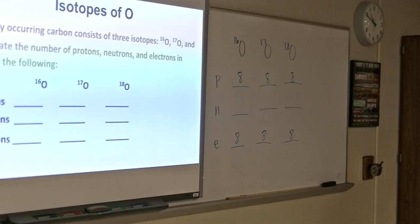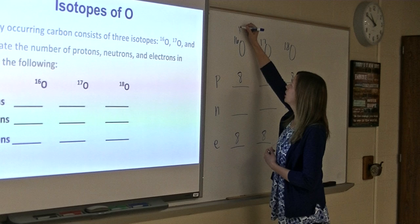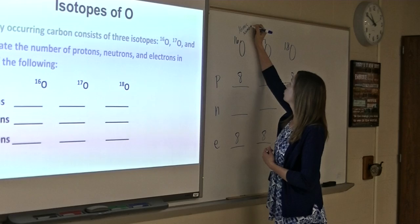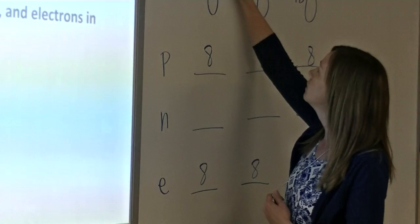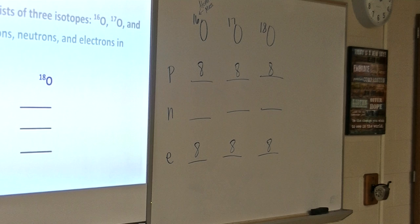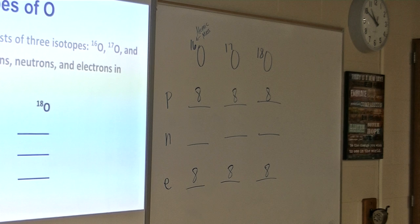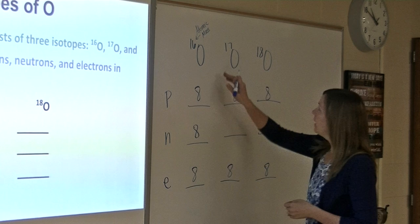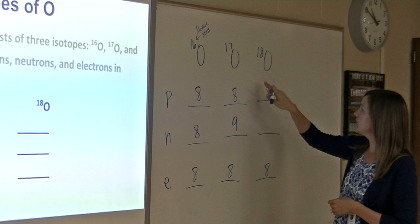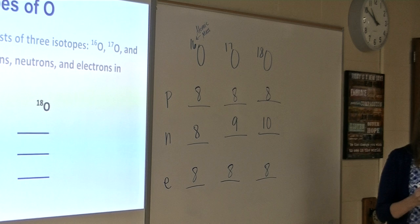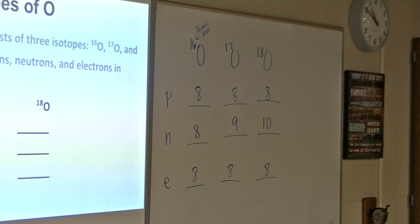So in order to calculate the number of neutrons that we're going to have, we're going to subtract. Now this number up here, you're going to have a quiz tomorrow over the periodic table, so you're going to need to recognize that when they are written this way, this is the atomic mass. So when it's written as a superscript like that, that's the atomic mass. So you're going to take that number of the atomic mass, you're going to subtract the number of protons to get the number of neutrons. So 16 minus 8 gives us 8. Now we have 17 minus 8, which will give us 9, and then 18 minus 8, which will give us 10. So notice again that the number of protons and electrons are not changing. It's just the neutrons, because the mass is different. You have more neutrons, you have a higher mass. Questions so far?